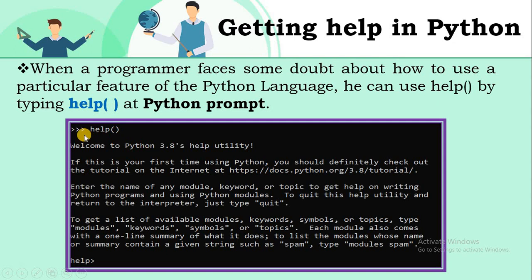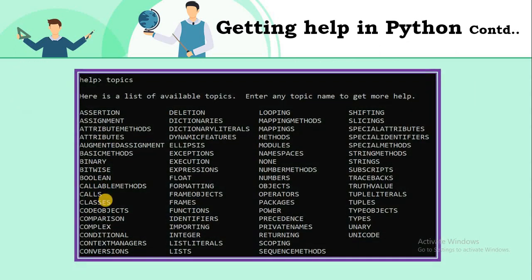When you open a Python command line environment, you can observe three greater-than symbols — that is called the Python prompt. After that, just type the help function. This environment will be changed into the help mode. After changing into the help mode, type 'topics'.